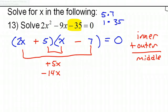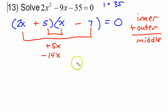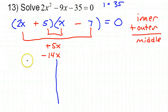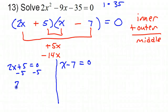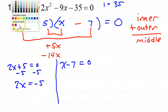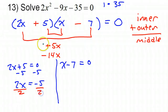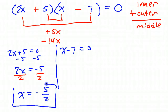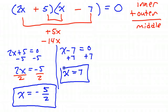We have factored it properly, so we can go ahead to the next step. We're going to set our factors equal to 0 and solve. So we have 2x plus 5 equals 0 and x minus 7 equals 0. Subtracting 5 from both sides gives 2x equals negative 5, then dividing both sides by 2 gives x equals negative 5 over 2 — one solution. Adding 7 to both sides of the other equation gives x equals 7 — the other solution.